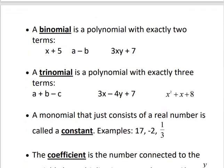A binomial is a polynomial with exactly two terms. This is a binomial because we see two terms separated by a plus sign. For example, 3xy plus 7 is a binomial because 3xy is one term — there are no pluses or minuses between the numbers and letters — and 7 is one term. Just like a bicycle has two wheels, a binomial has two terms.